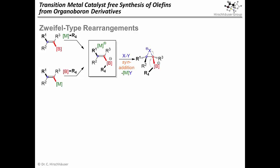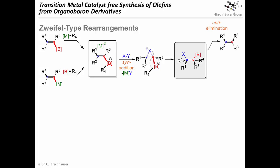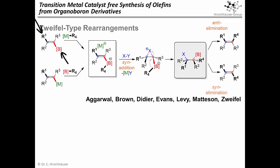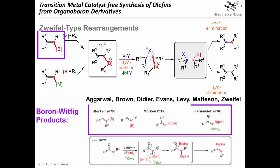In the classic Zweifel olefination this oxidation is performed with a halogen. Keep in mind that the resulting halonium ion is the product of a syn addition. The subsequent 1,2-rearrangement furnishes our key elimination precursor. Classically, the Zweifel olefination is concluded with a base-induced anti-elimination. So this combination of syn addition towards the halonium ion and anti-elimination towards the final alkene leads to overall inversion. But 55 years of development on the Zweifel olefination has furnished methods that allow for syn elimination as well.